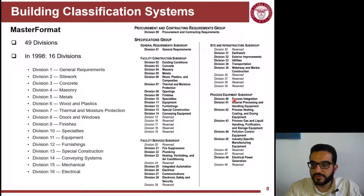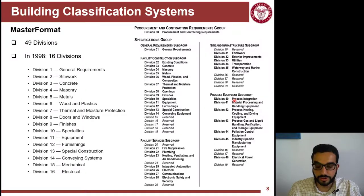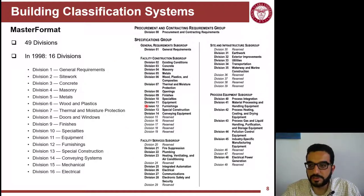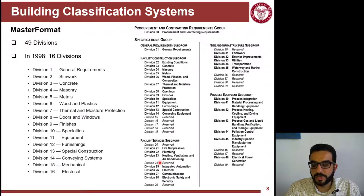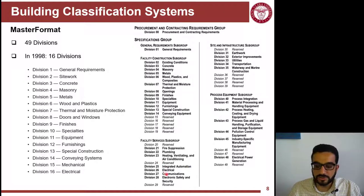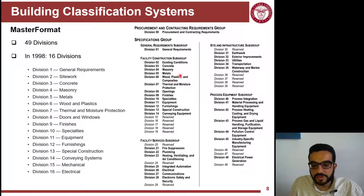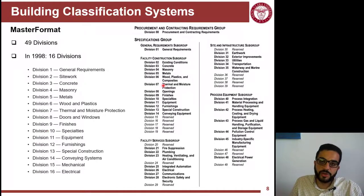MasterFormat has 49 divisions. It started in the old days with 16 divisions, but following the 2010 update, many divisions were expanded. Up to Division 14 there is a lot of overlap between the old and new versions, but Divisions 15 and 16 became more detailed. At that time, building automation systems became more sophisticated — automation, electrical, communication, internet cabling, and many other systems started entering buildings — so they came up with 49 divisions instead of 16, and every division is broken down further and further.